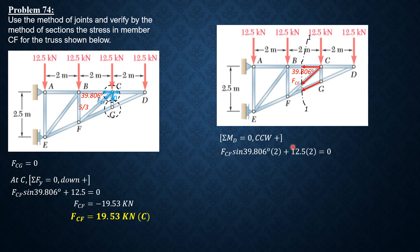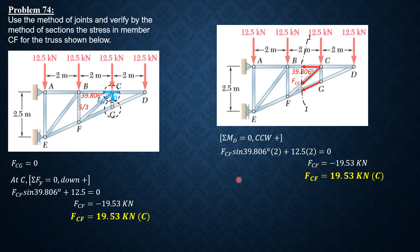Summation of moments about D equals zero, counterclockwise positive: FCF sine 39.806 times 2 plus 12.5 times 2 equals zero. Canceling the factor of 2 gives the same equation as before. Therefore FCF = negative 19.53 kilonewtons, or FCF = 19.53 kilonewtons compression. That's it for this problem.